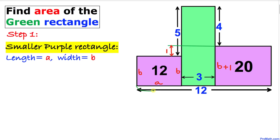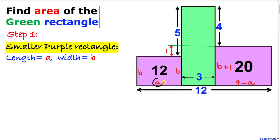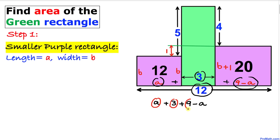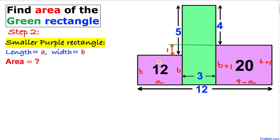This distance from here to here is 'a', from here to here is 3, and the total length is 12. So the width of the larger purple rectangle is 9 minus a. We can verify: a plus 3 plus (9 minus a) equals 12 — the a's cancel, and 3 plus 9 gives us 12. So for the larger purple rectangle, the length is 9 minus a and the width is b plus 1.